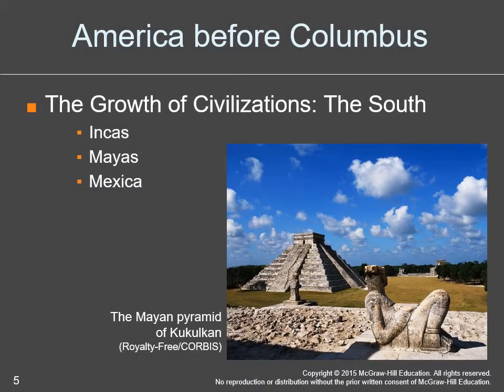The important takeaway about the growth of civilizations in the south — the Incans in Peru, the Mayans, and the Aztecs — is that they were complex societies. What makes them complex? They had written languages, number systems, accurate calendars, trade routes, schools, and an organized military and medical system. So if your preconceived notion is that all Native American societies were simple, this is evidence that was not the case.